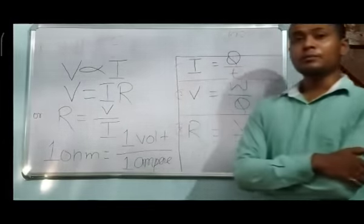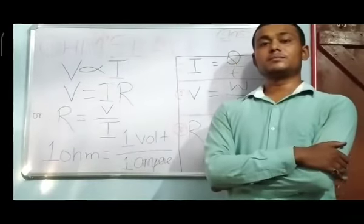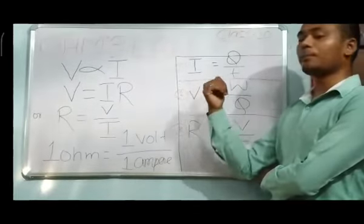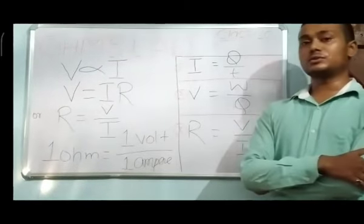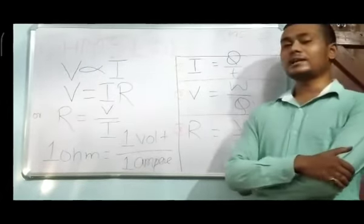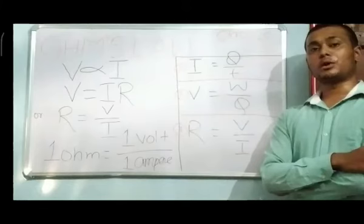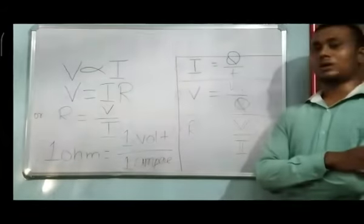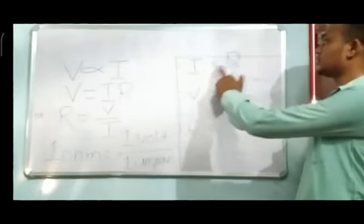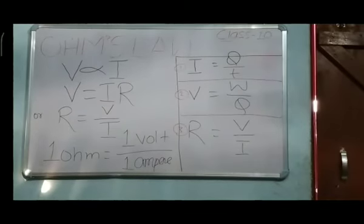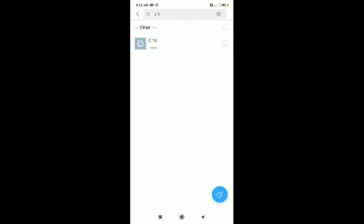From the beginning of this chapter to now, we have three important formulas to remember: first, I equals Q upon T; second, V equals W upon Q; and third, R equals V upon I. These three formulas are very important and required for solving any numericals.